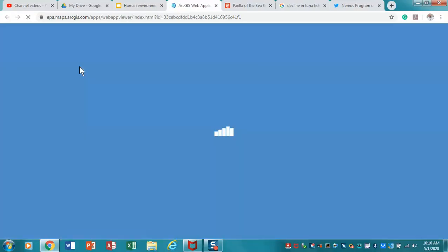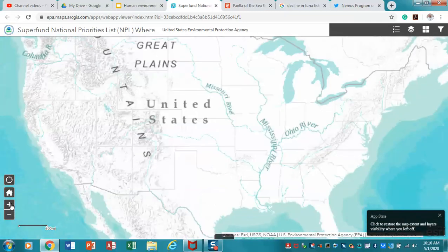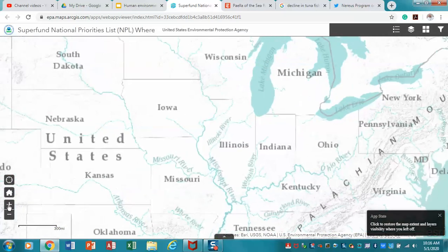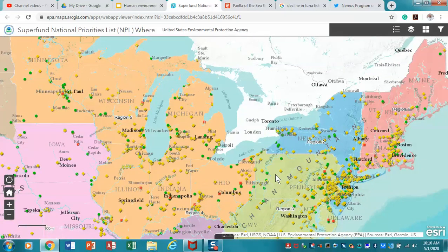And so let me bring up the map here. These are the CERCLIS sites, the Superfund sites. And if I were to look at us, what you might see in Pennsylvania. Now, again, you'll notice that these are small locations. So these are localized. Their extents are very small.